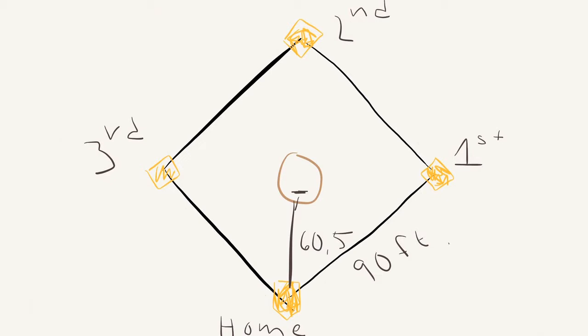It is 60.5 feet to the pitcher's mound where he stands. What do we want to know? We want to know how far it is from where he stands to first base and where he stands to second base.